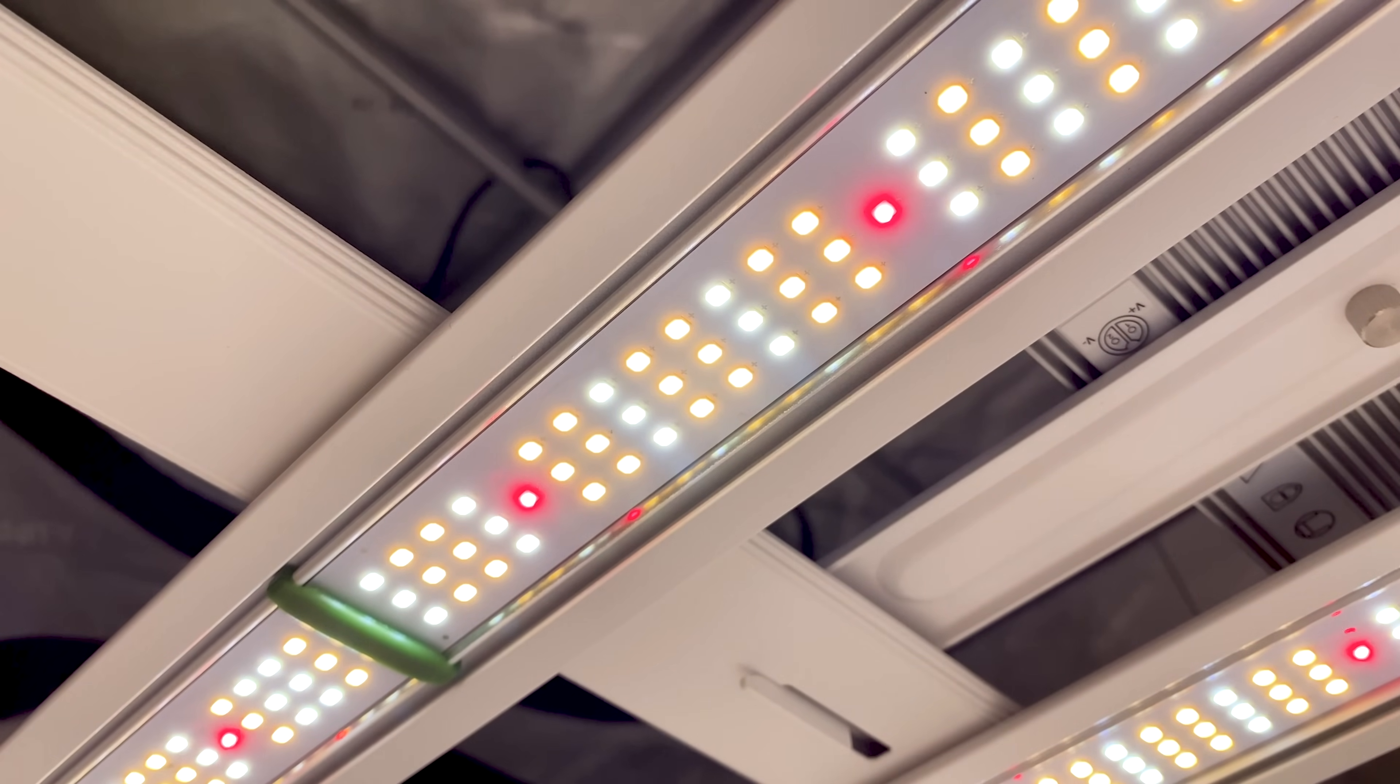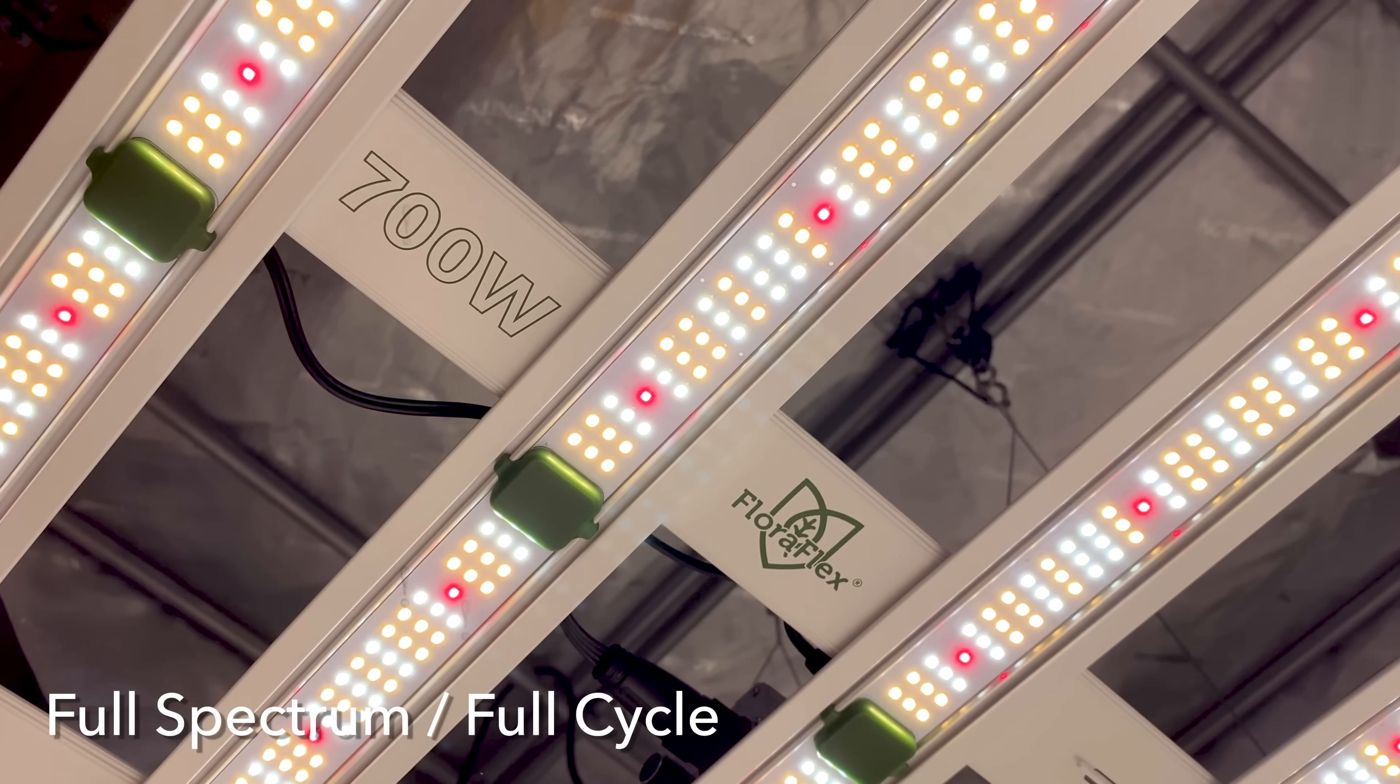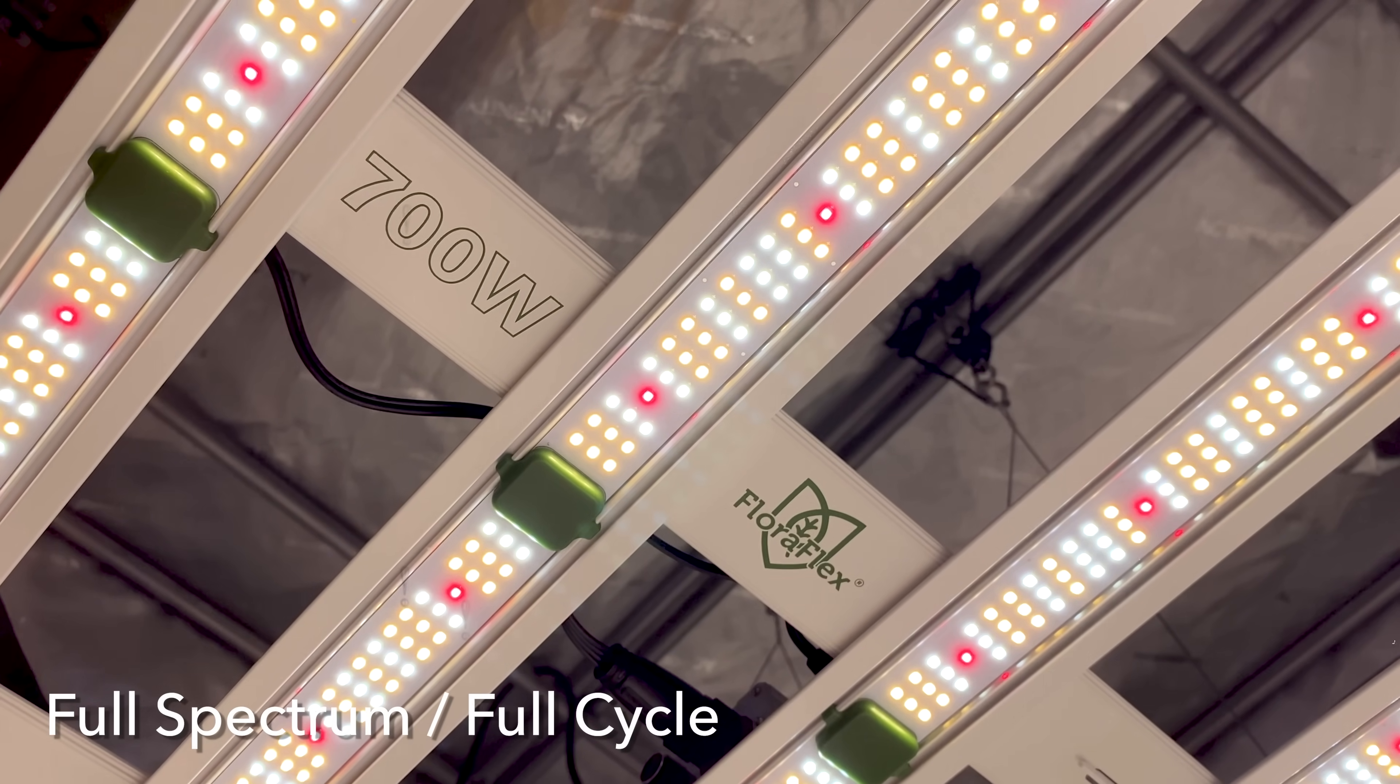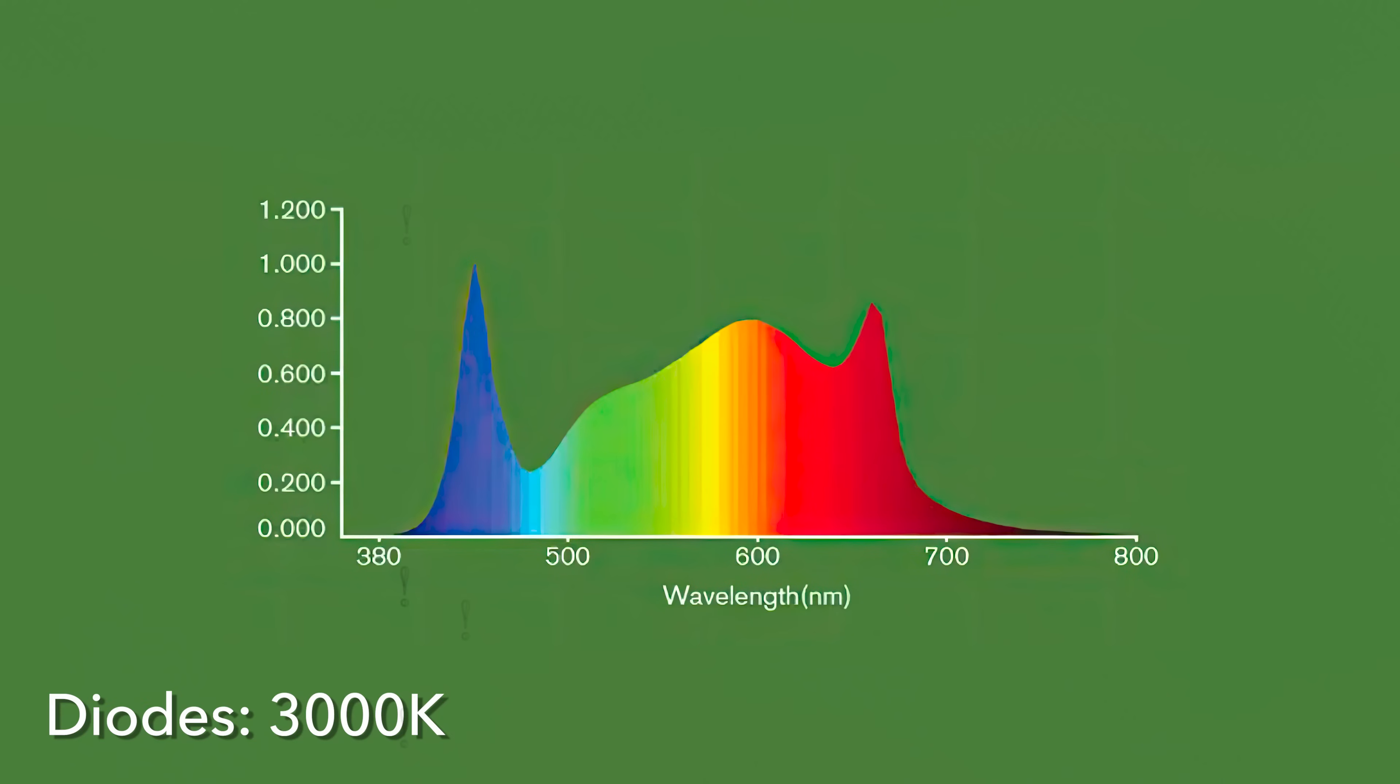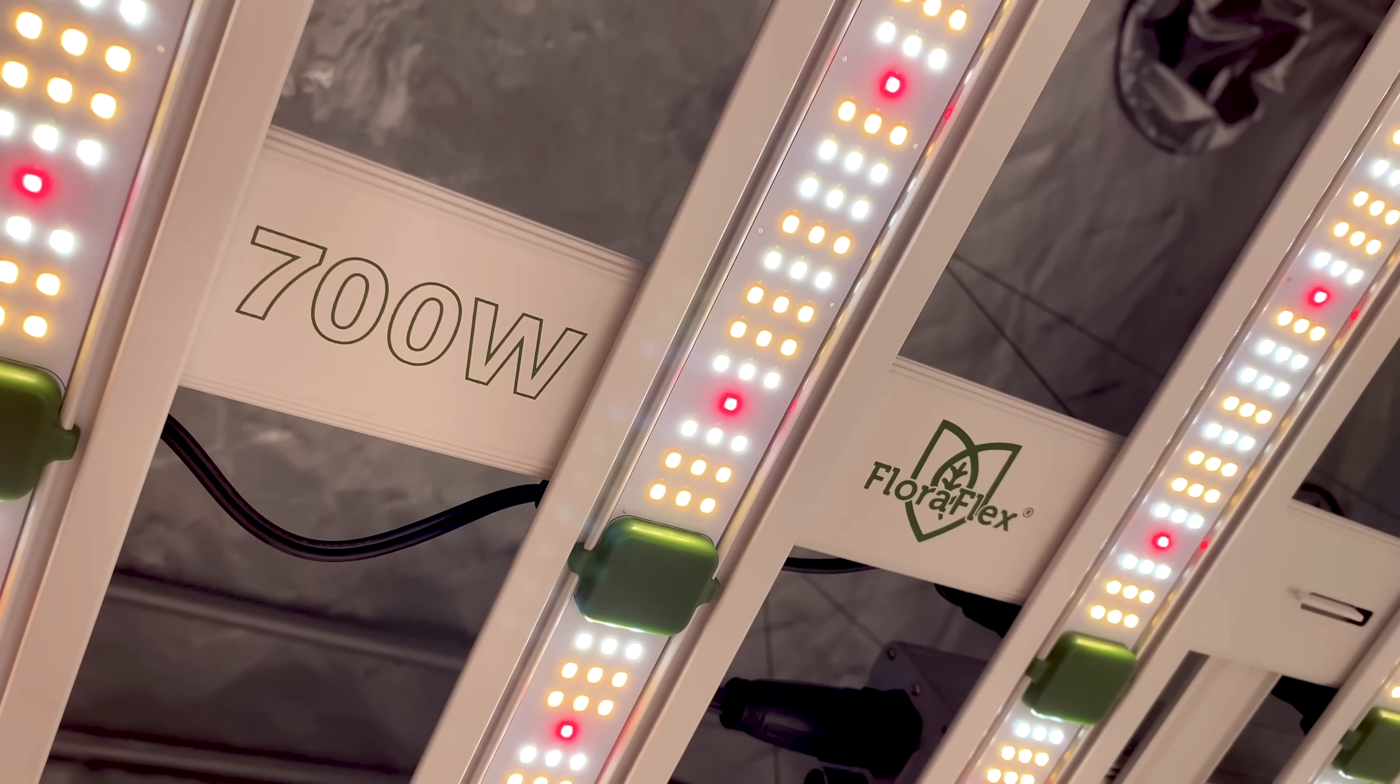Let's take a closer look at the diodes. The FloraFlex 700W uses a full spectrum design that will support your plants from seed to harvest. The spectrum is composed of custom 3000K warm white, 5000K cool white diodes, and Osram 660nm deep red diodes. Additionally, the white light diodes contribute a bit of far red to the spectrum.